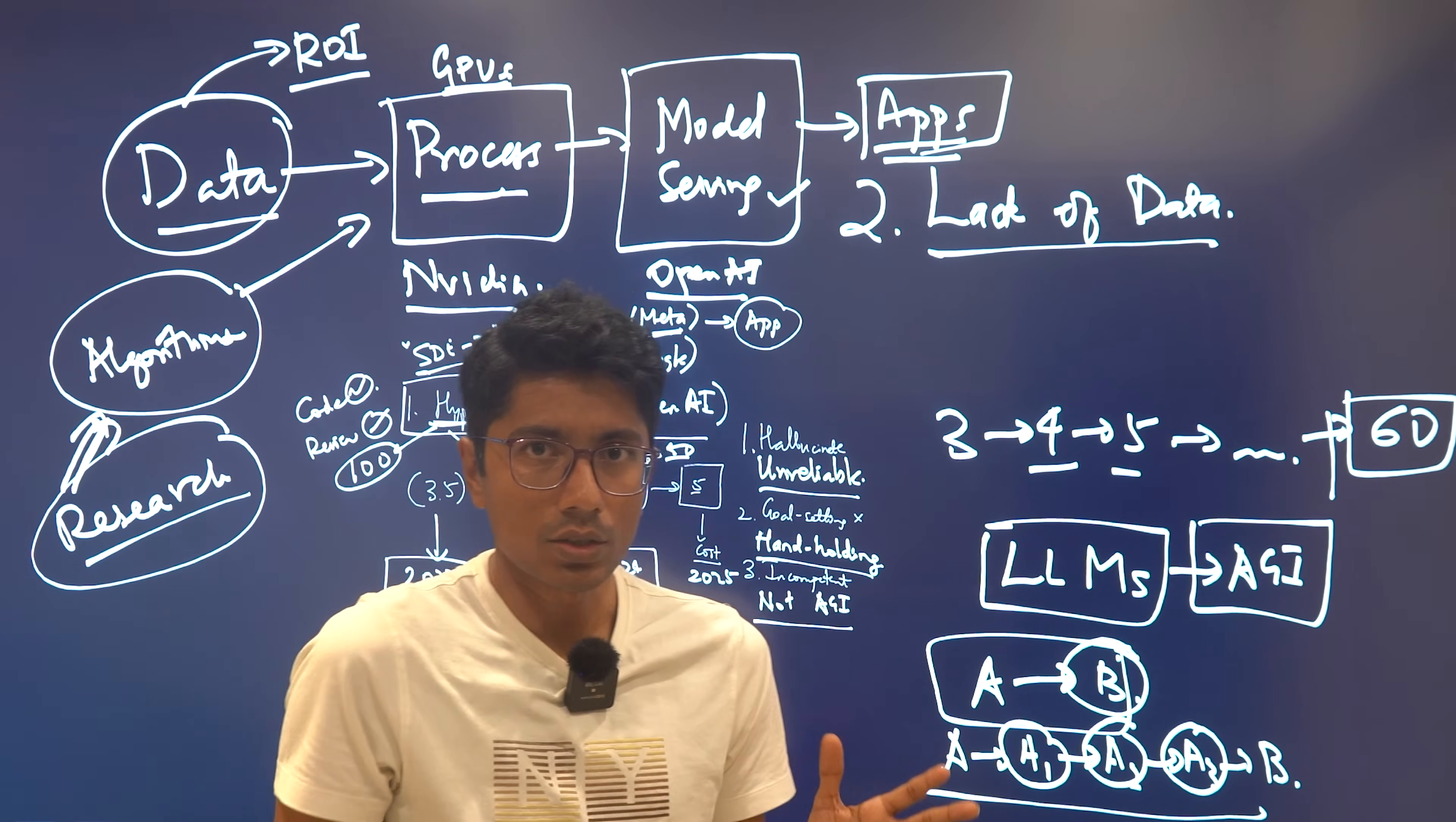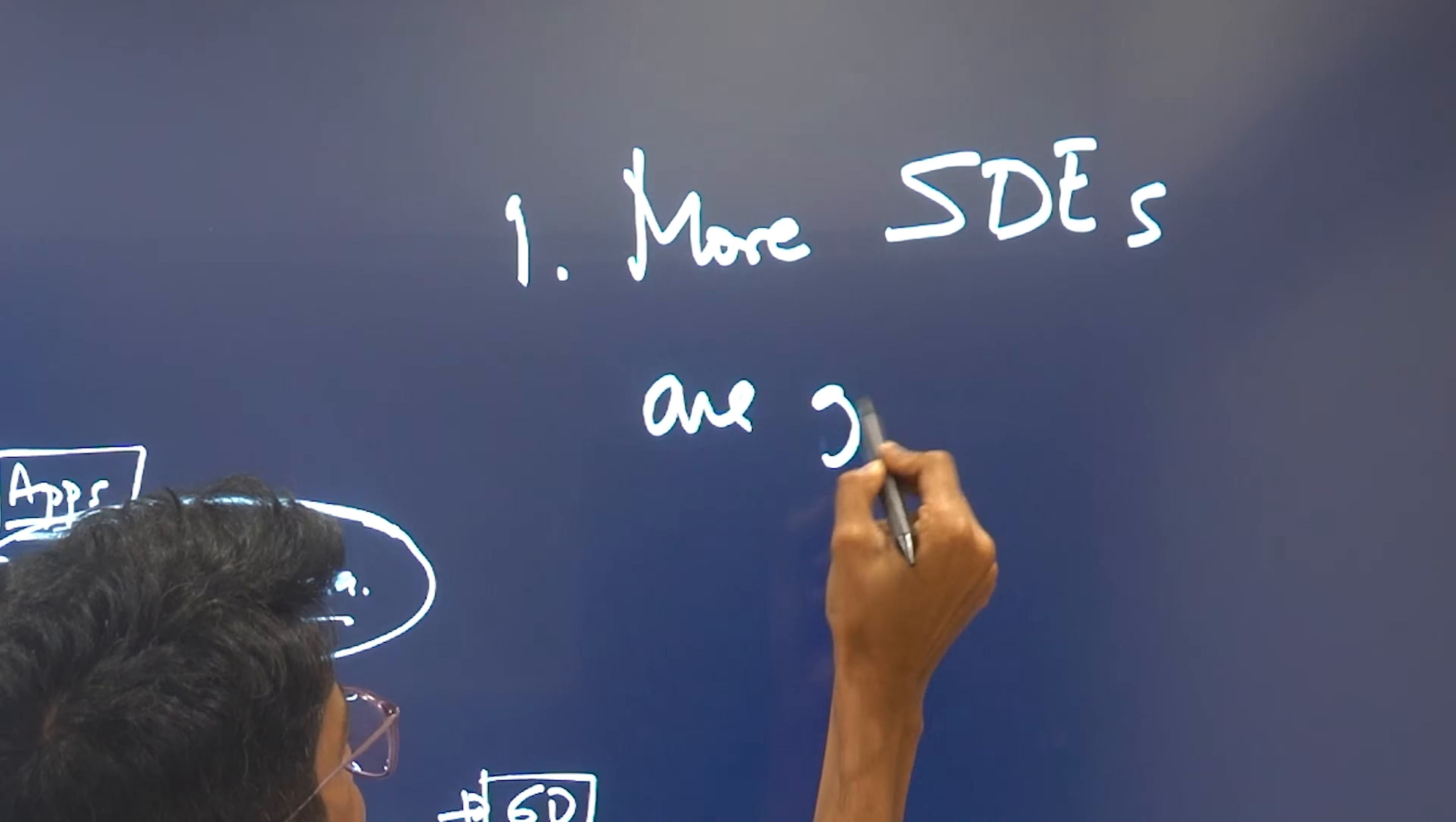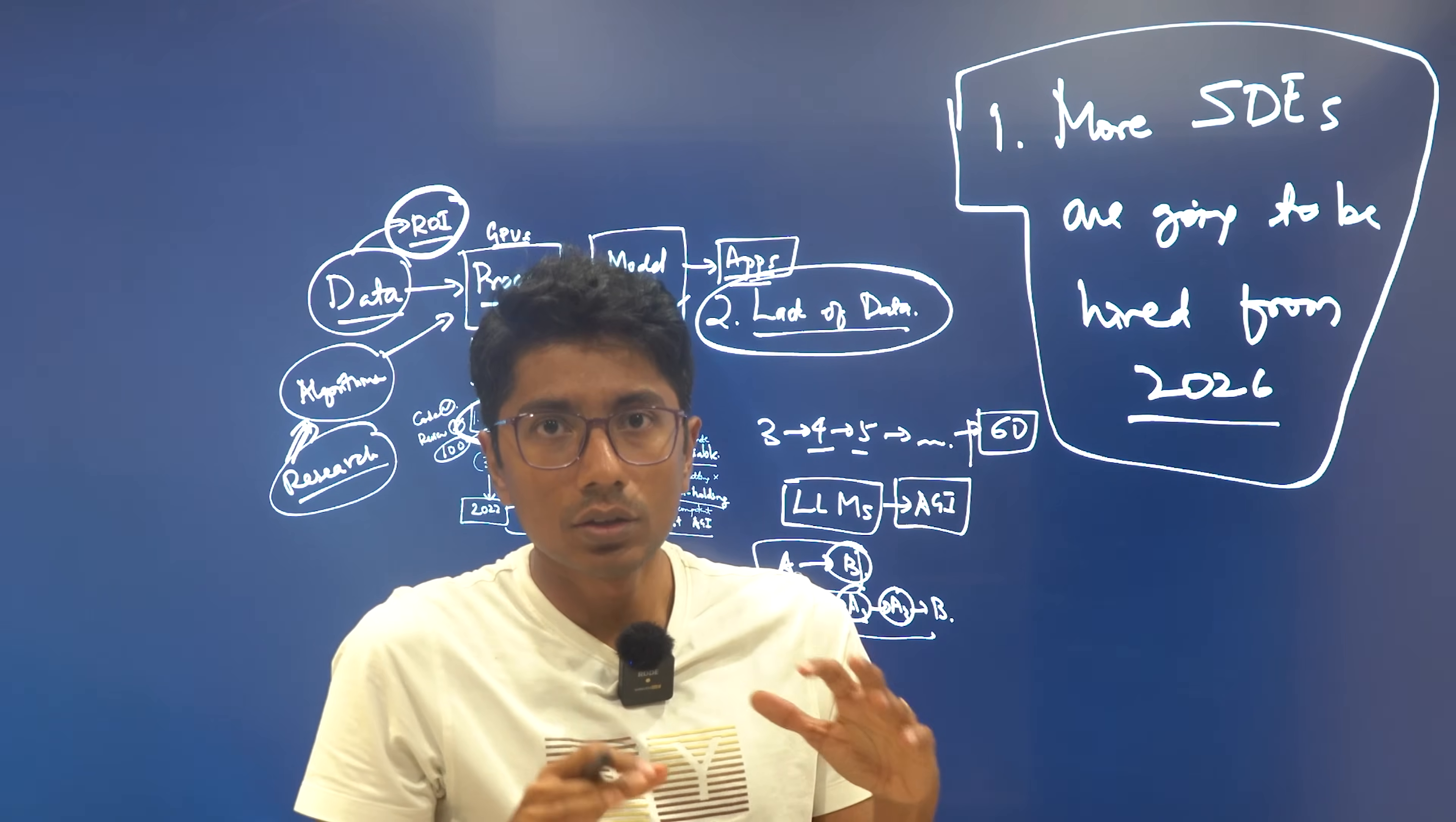So where does this put us? What kind of predictions can we make in the AI space? There is a lack of data. There is dying hype. Companies are building their own models. Costs are being reduced and ROI is worse than ever. So what do we expect in future? One is more engineers, most likely SDEs, are going to be hired from 2026. There is no new model out there. The companies are feeling comfortable with the existing technology. They have seen the limits of the existing technology. So they know which spaces they have to cover. So you will see talent being hired. Most likely software engineers are going to see the tech winter thawing.